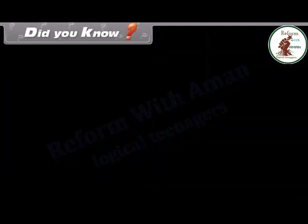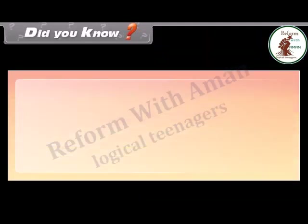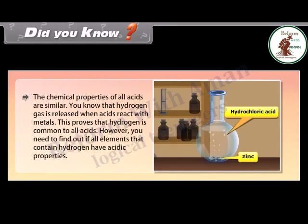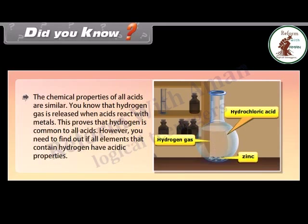Did you know? The chemical properties of all acids are similar. Hydrogen gas is released when acids react with metals, which proves that hydrogen is common to all acids. However, you need to find out if all elements that contain hydrogen have acidic properties.